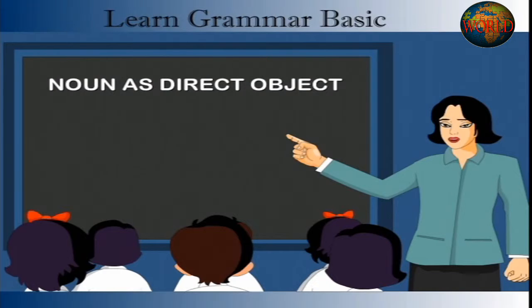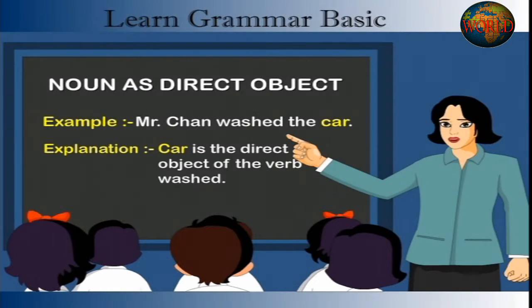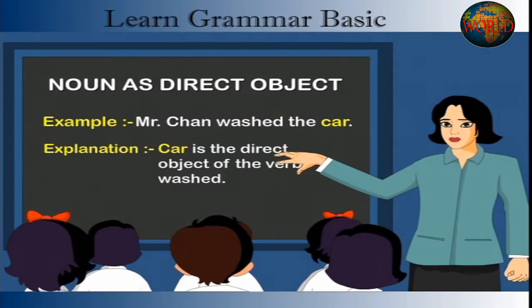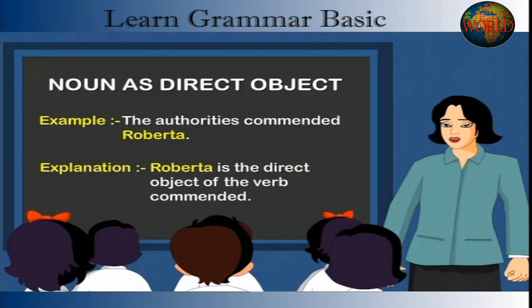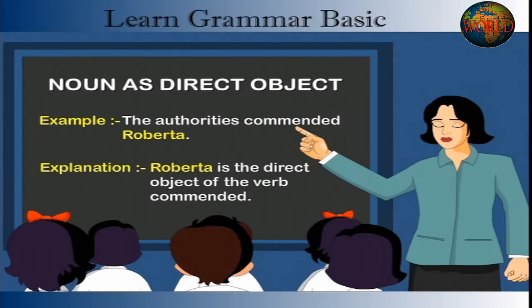Noun as Direct Object. Example: Mr. Chan washed the car. Explanation: Car is the direct object of the verb washed. Example: The authorities commended Roberta. Explanation: Roberta is the direct object of the verb commended.